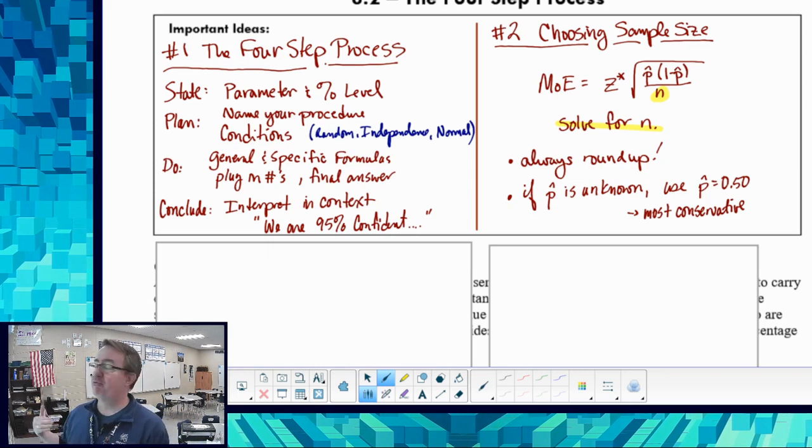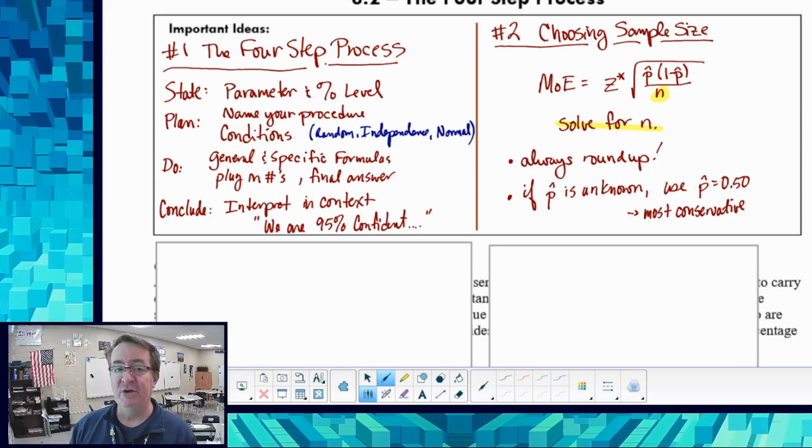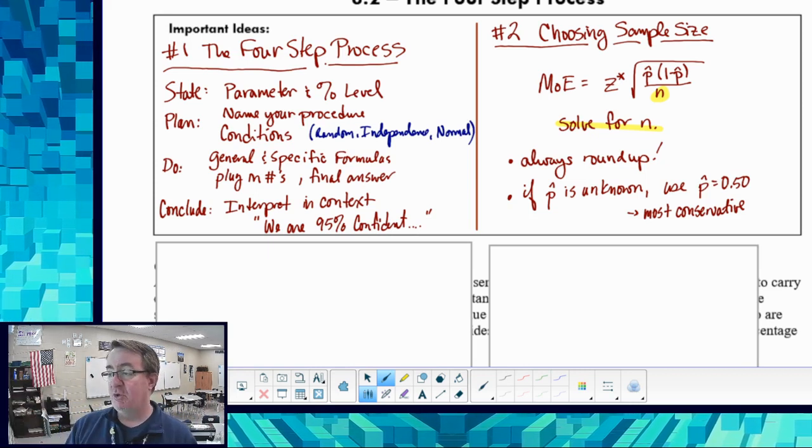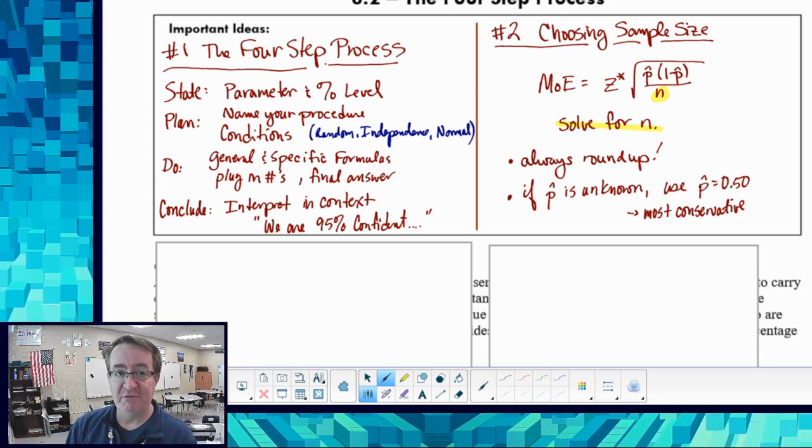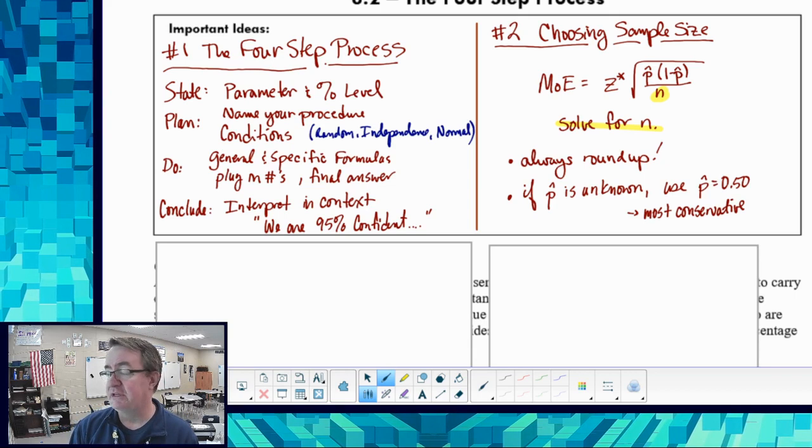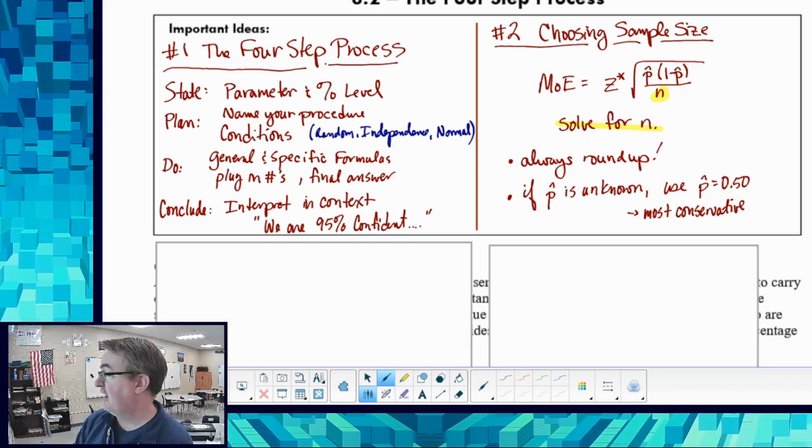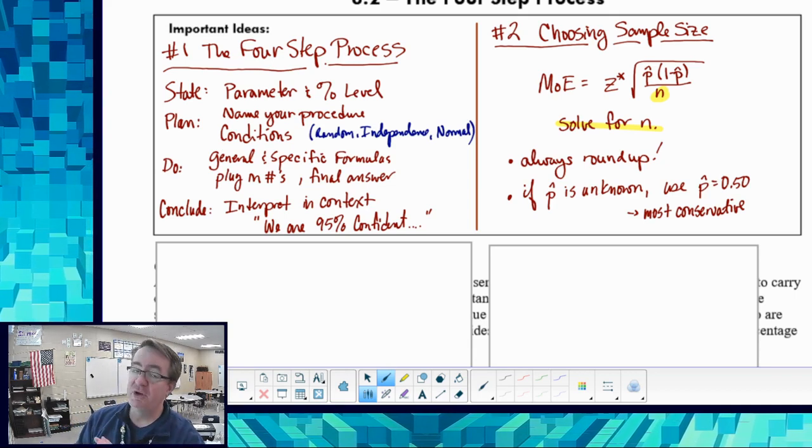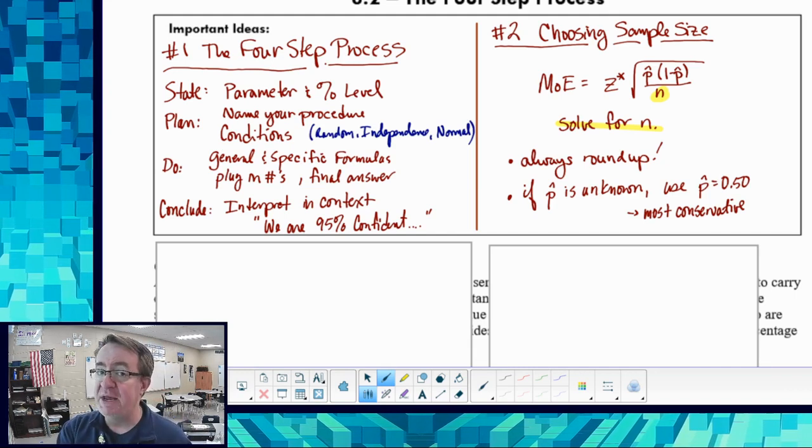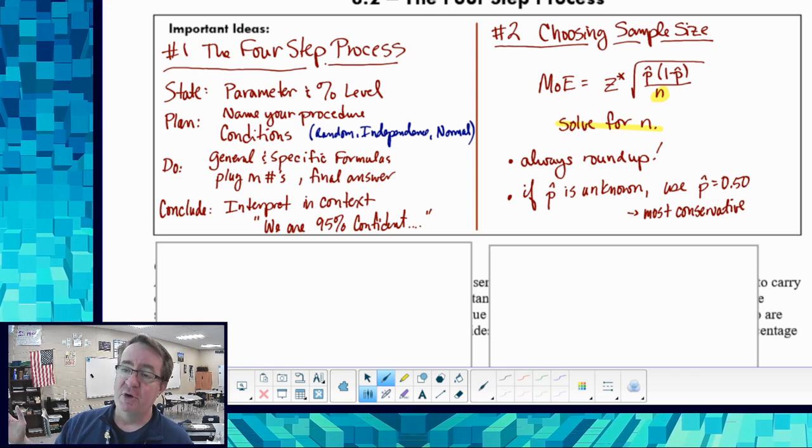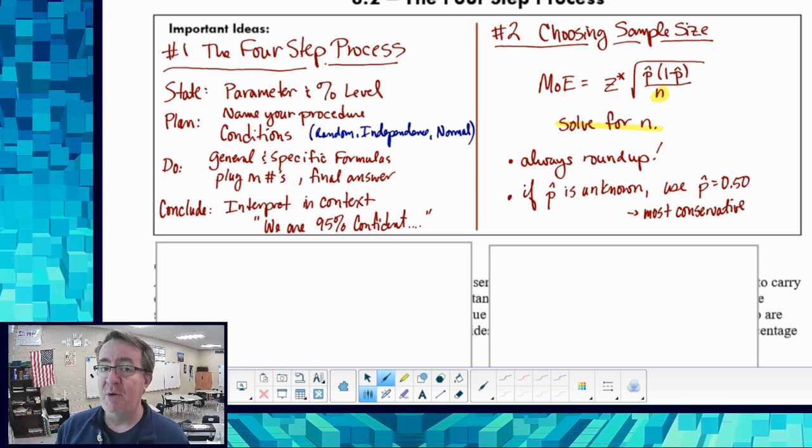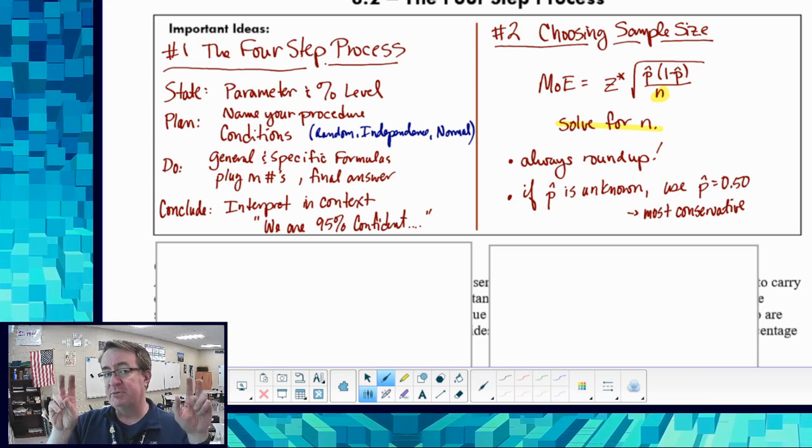So by choosing 50-50, it is going to be the most conservative option. That's the reason why we round up - because that way we're guaranteed we have a better chance of making sure we're capturing things. And we're also making sure that by going 50-50 if we don't know p hat. If we have an idea of p hat, we can always use that. If we don't know p hat, we're going to play it conservative.